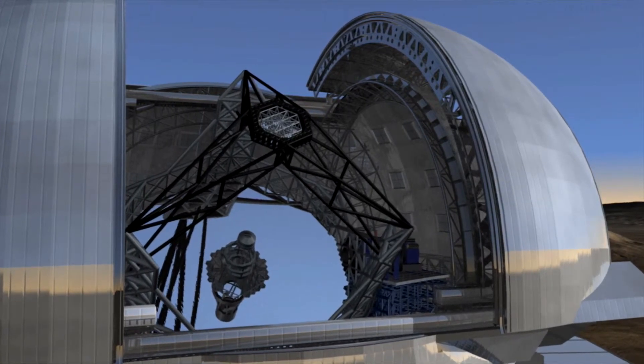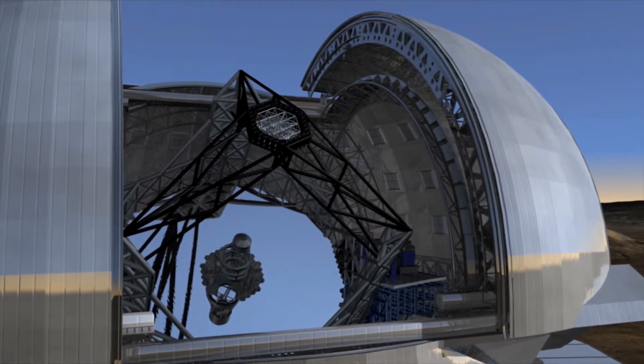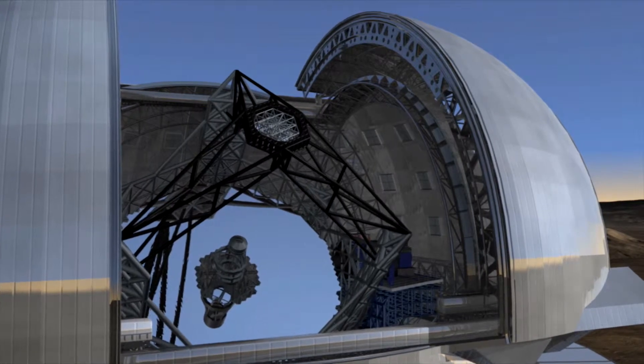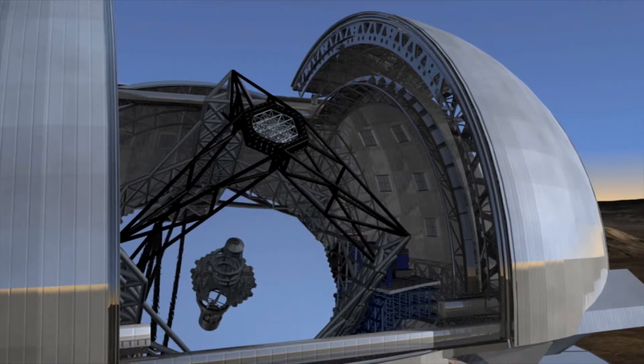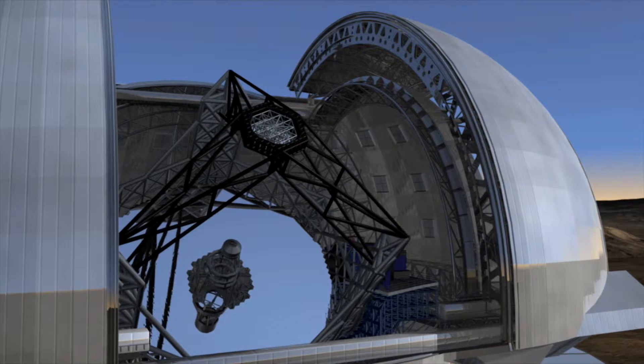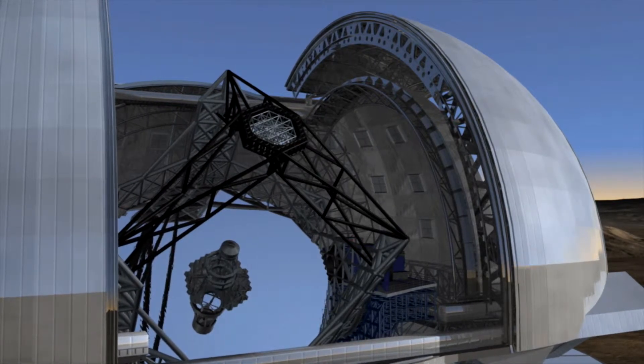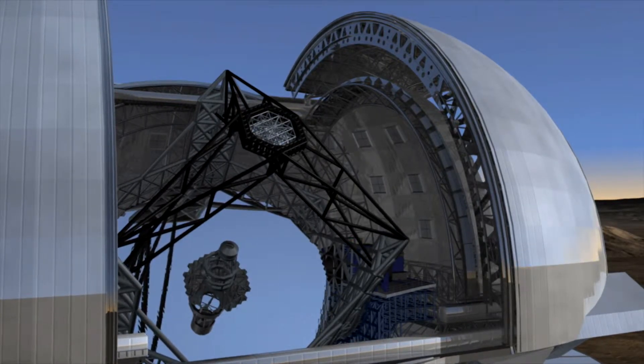Moreover, they may provide us with the first true picture of a planet in another solar system. For radio astronomers, 42 meters is peanuts. They hook up many smaller instruments to synthesize a much larger receiver.